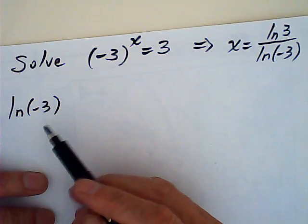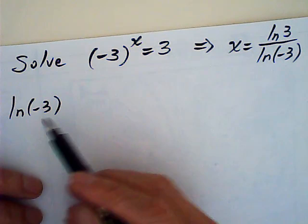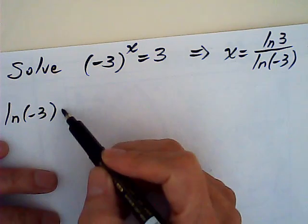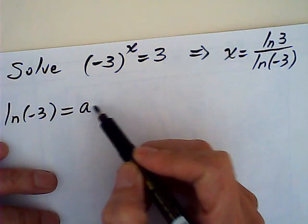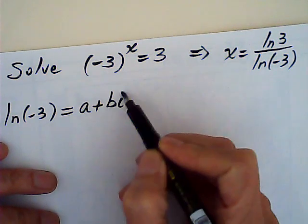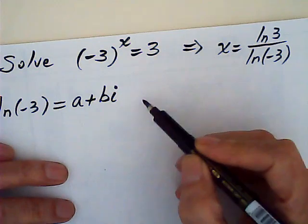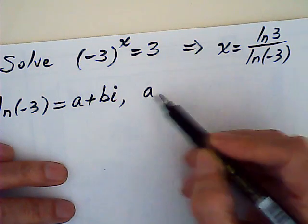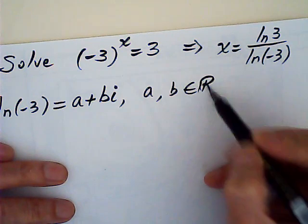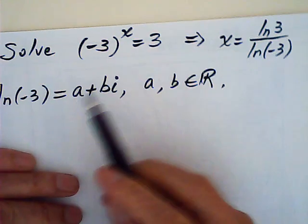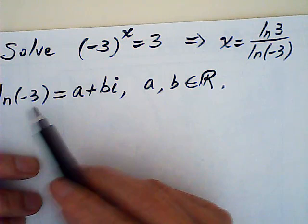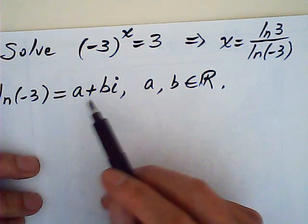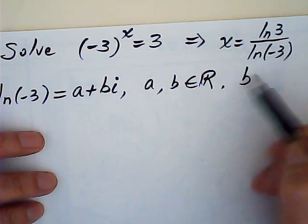Now, obviously, that natural log negative 3 is not a real number. So, this is a complex number. It's a plus bi, right? And a and b are real numbers. And b cannot be zero. If b were zero, then it would no longer be complex, rather real.